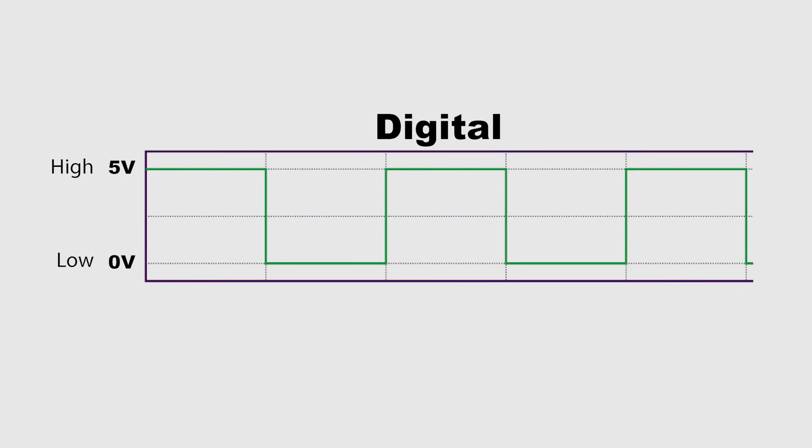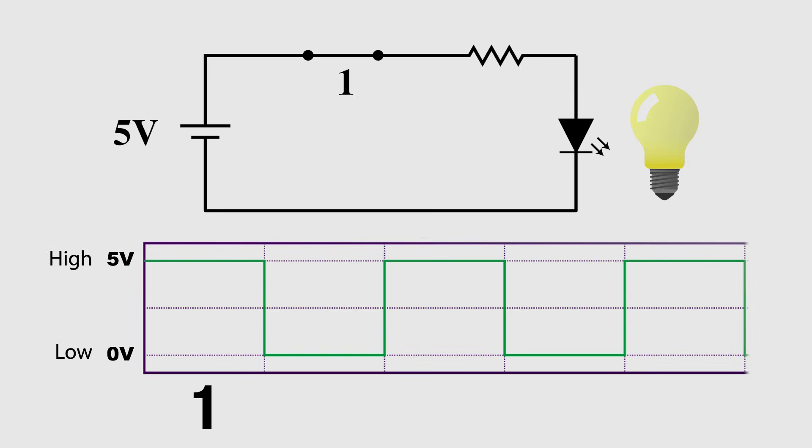We've learned that digital electronics have two states, high and low, represented by a 1 and 0, respectively. A 1 is when the higher voltage, often 5 volts, is being supplied, while a 0 is when 0 or near 0 volts is supplied.